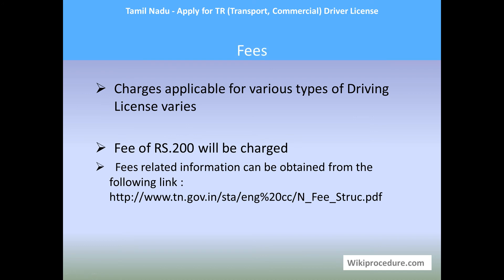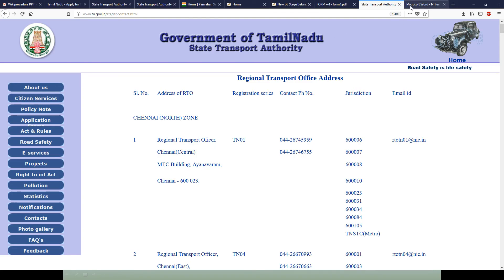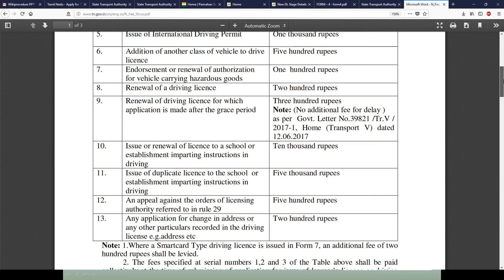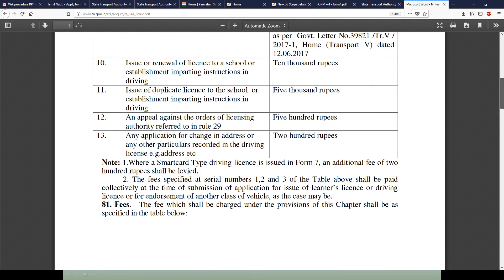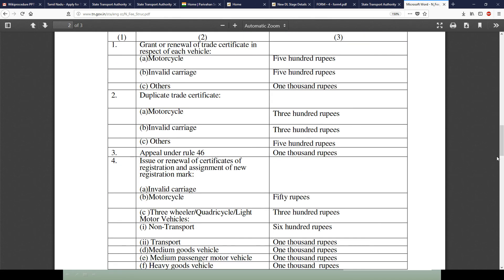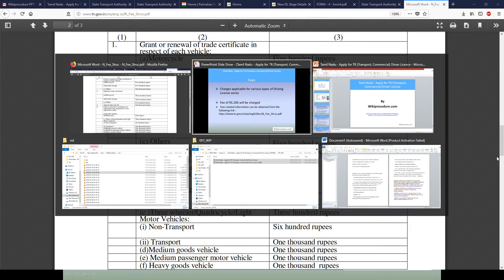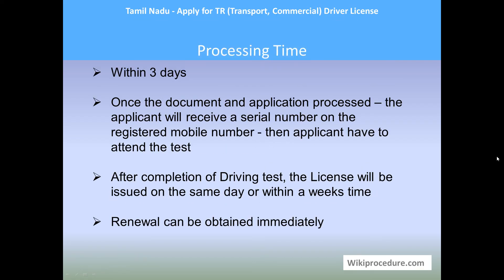Fees: charges vary with the type of vehicle and type of license. For the TR license, the fee is 200 rupees. A fees-related link is provided which gives details of fees collected for different types of licenses — please go through it to get full awareness.